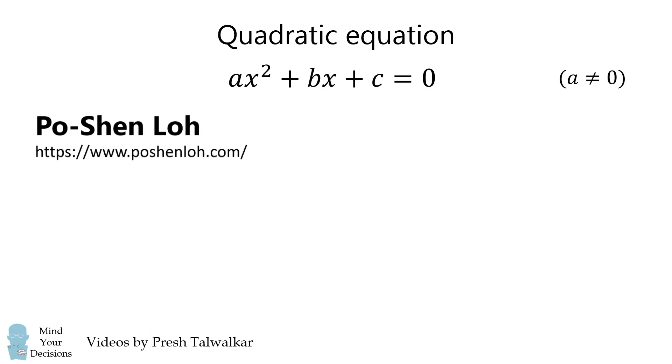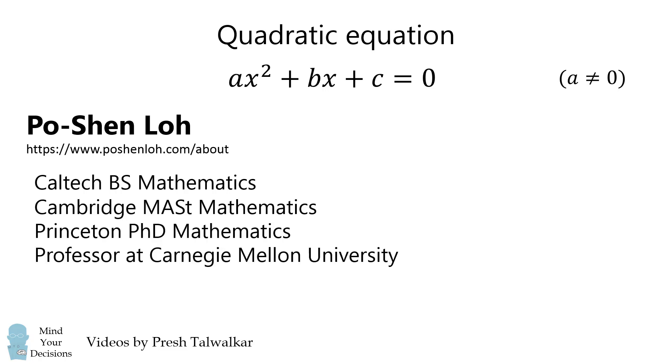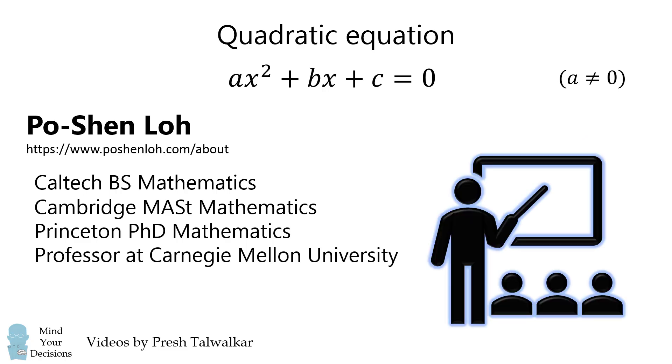For those that don't know, Po Shen Loh has math degrees from Caltech, Cambridge, and Princeton. He's also a professor at Carnegie Mellon University, and he's the coach of the US Mathematical Olympiad team. He coached the team to its first ever back-to-back number one ranked victories in 2015 and 2016, and he coached them to their second ever back-to-back number one ranked victories in 2018 and 2019. If Professor Loh is suggesting a problem-solving method, it is definitely worth trying.